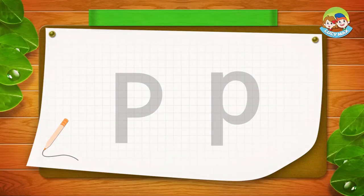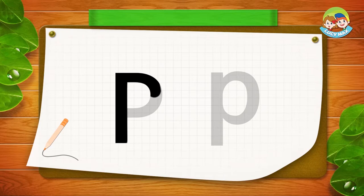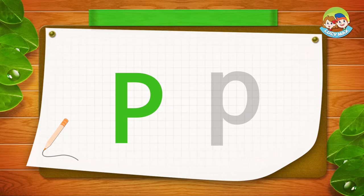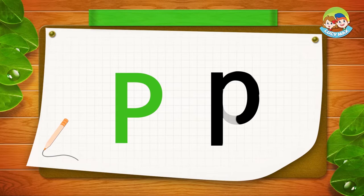Now we will write big P and small p. First is big P — you write a line down and then go over and around. That's a big P. Now let's write small p. You draw a line down, go up, and make a little circle. That's small p. You can try to write big P and small p on your paper.